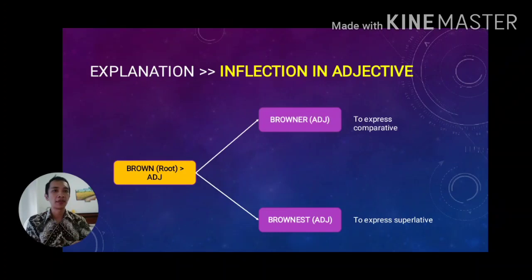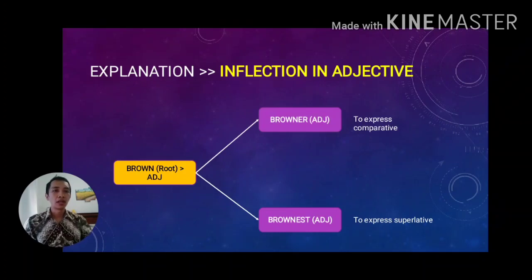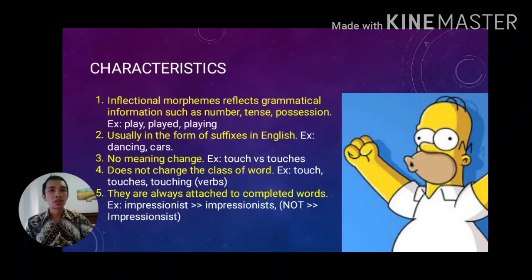Inflection also occurs in adjectives. Take 'brown' as a root adjective. When comparing, we add the suffix '-er' to get 'browner,' and for superlative comparison we add '-est' to get 'brownest.' Both 'browner' and 'brownest' remain in the same class of word as the root 'brown' — they are all still adjectives. This is also called an inflection process.